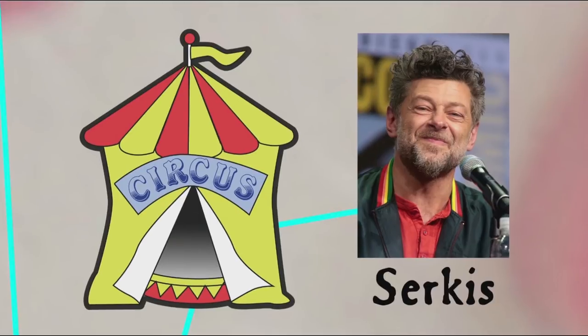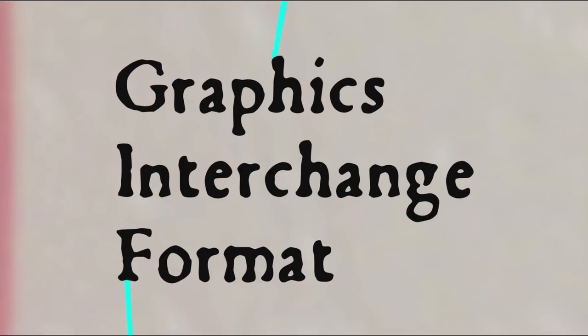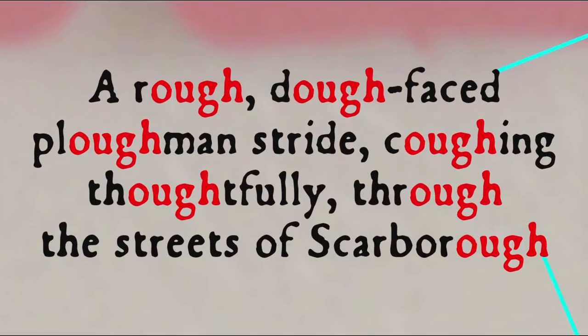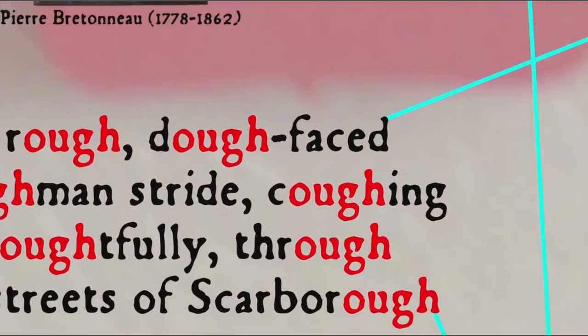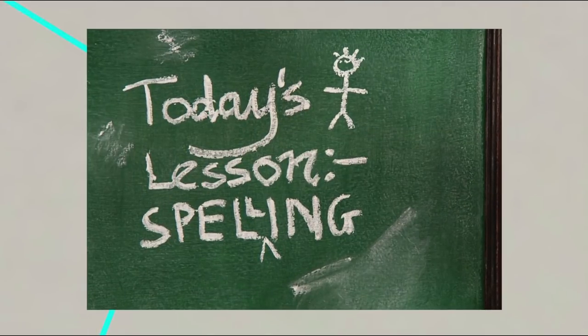Why is it circus and not circus? Why are we so confused about whether it's gif or jif? And why can a rough doe-faced plowman stride coughing thoughtfully through the streets of Scarborough? Can't we just simplify English spelling? Well, as we'll see, English may not be quite as irregular as it seems, and there may actually be some benefits to those peculiarities. And maybe the problem isn't so much the spelling as the way it's taught, unconnected to the fascinating story of its development.